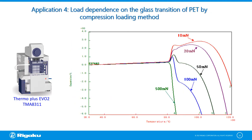This application demonstrates the load dependence on the glass transition of PET by compression loading method. PET material was measured under several load conditions of 10, 20, 50, 100, and 500 millinewtons. The sample presents an expansion curve with a slope change at 80 degrees centigrade due to glass transition, followed by a shrinkage curve due to softening, and these thermal behaviors show load dependence. The larger the load, the less likely we can observe expansion during glass transition, because the detection rod with a larger load will immediately crush the sample. For polymer samples, smaller loads like 10 to 50 millinewtons are ideal; for metals and ceramics, a larger load is recommended.